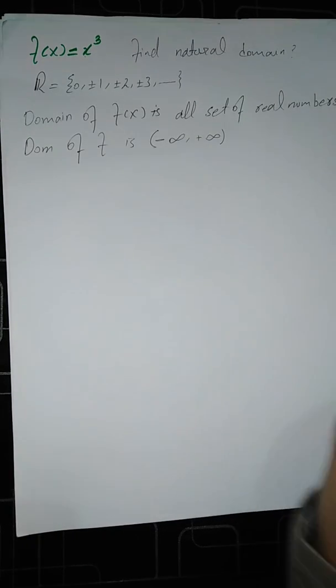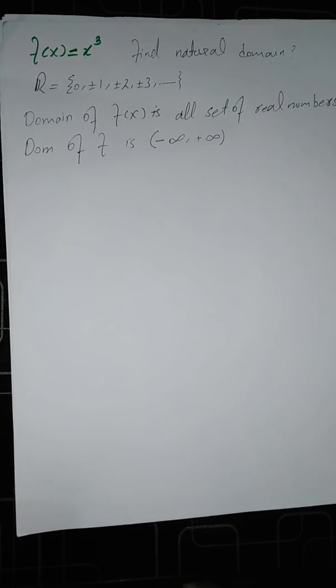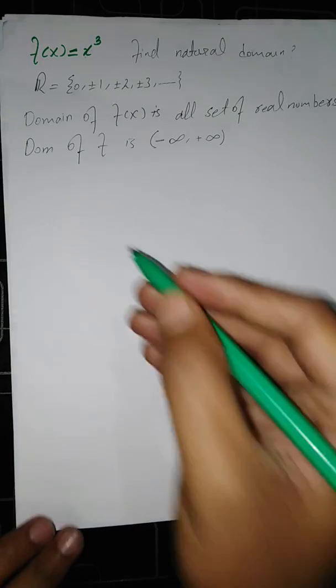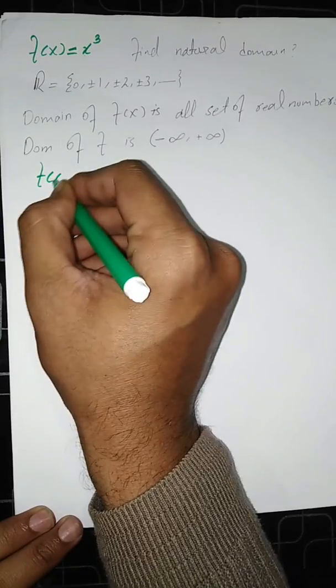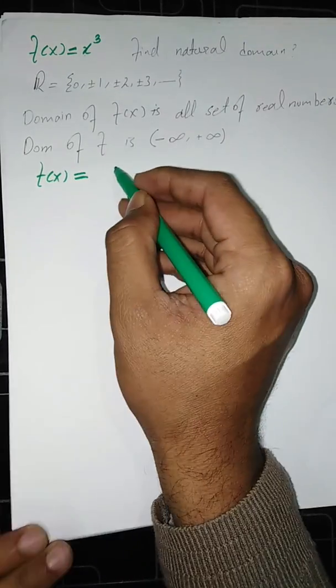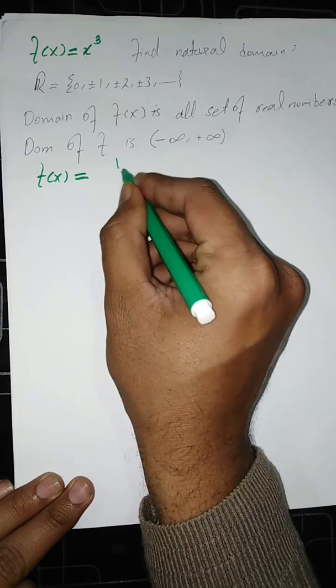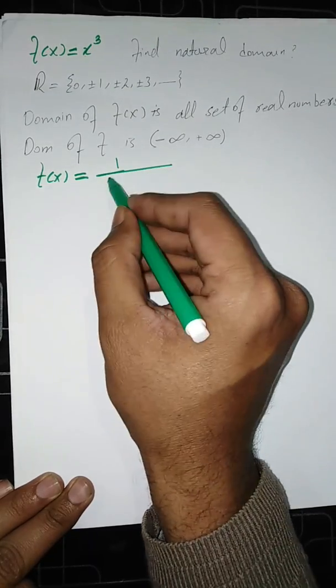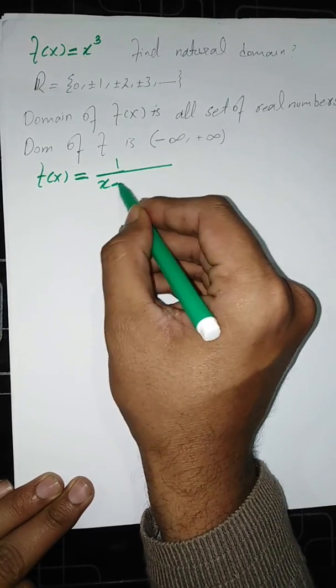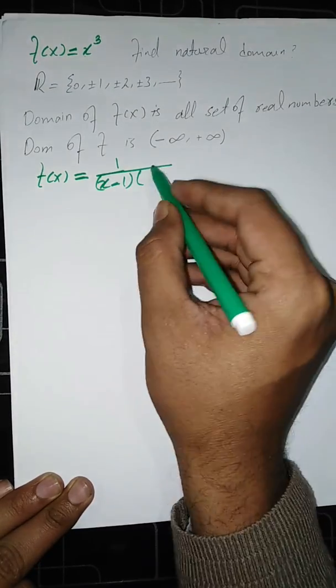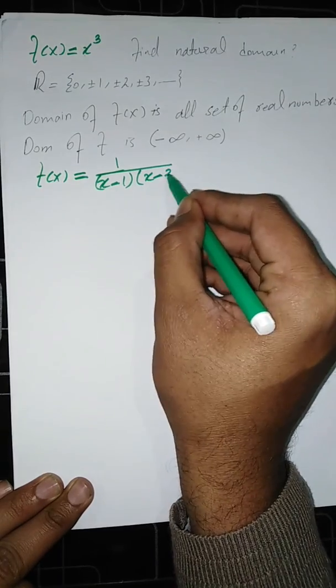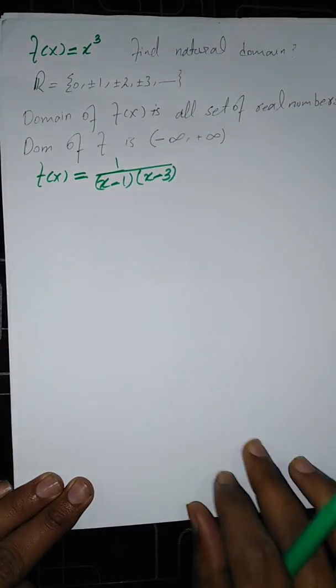Now for another example, let's say f of x equals 1 over the product of x minus 1 and x minus 3.